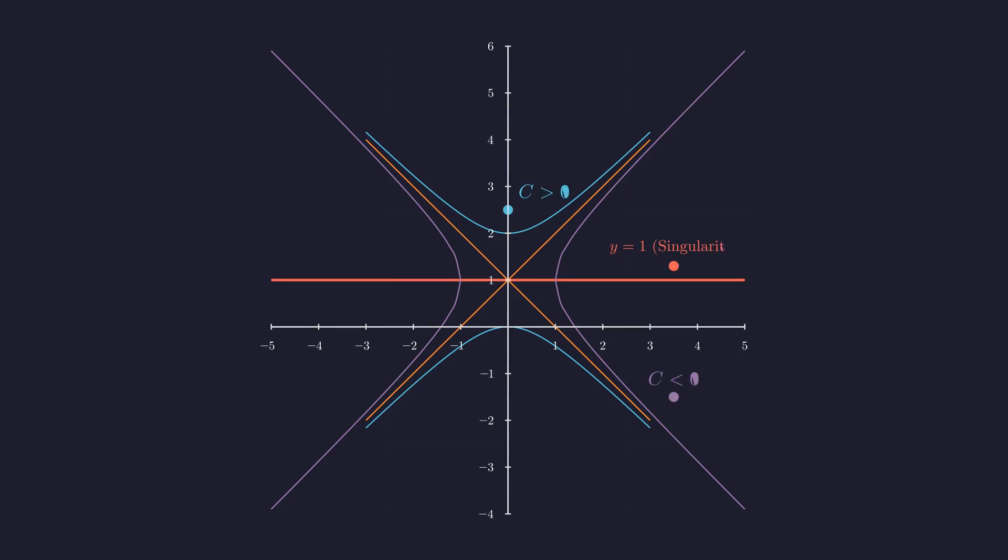The blue hyperbolas never touch the red line. Their vertices have a horizontal slope. It is the purple hyperbolas that actually cross the singularity. At these crossing points, their tangents become perfectly vertical, fulfilling the title of the equation that explodes.